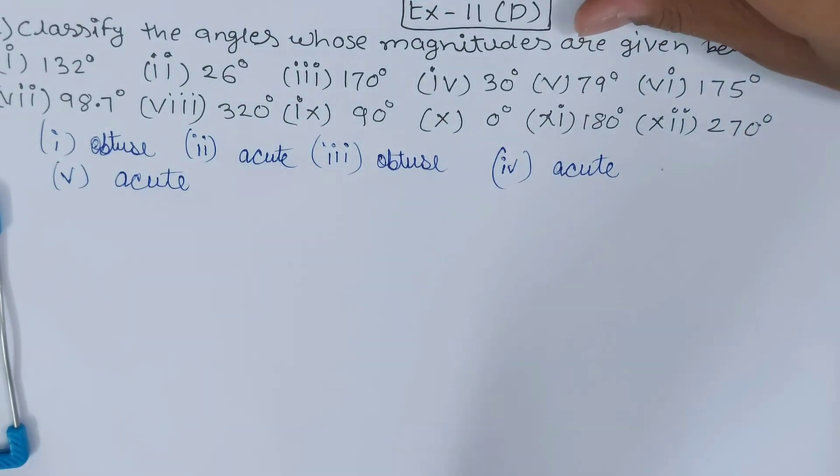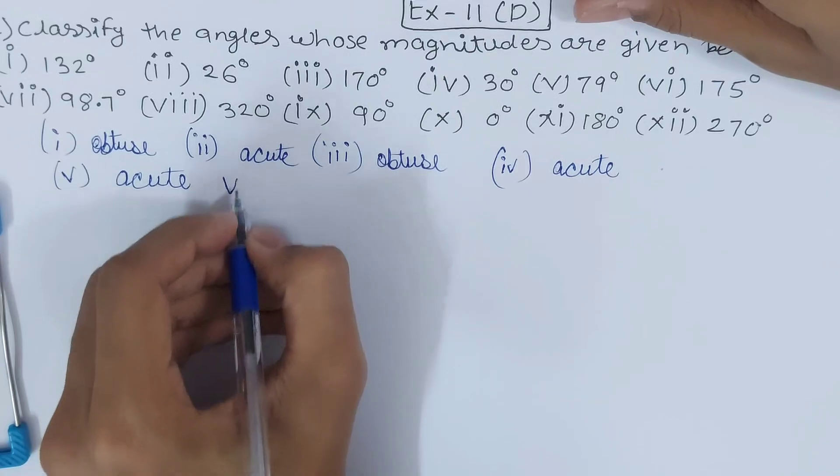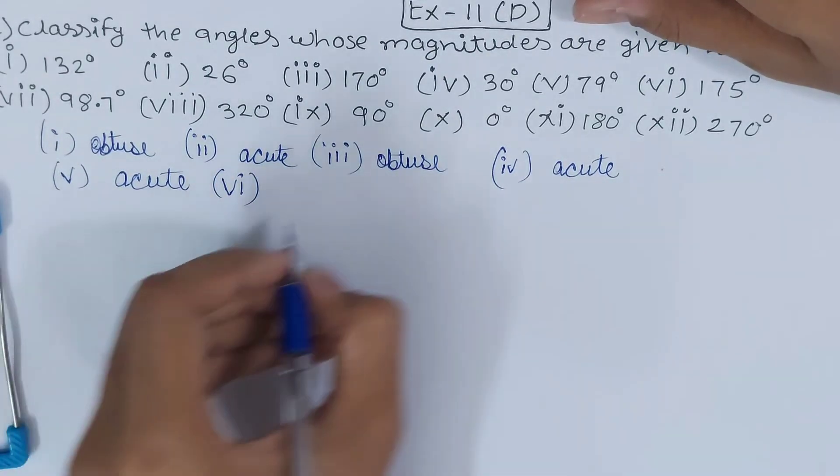Then 175. 175 falls in the category of more than 90, less than 180. So what will this become? An obtuse angle. So part six your answer becomes obtuse.